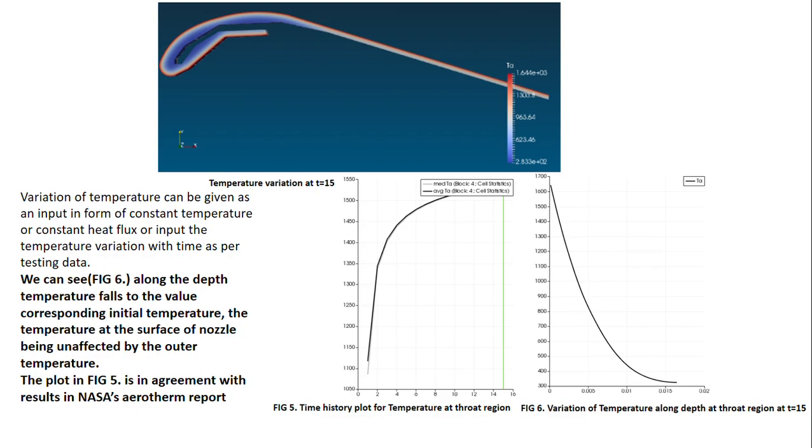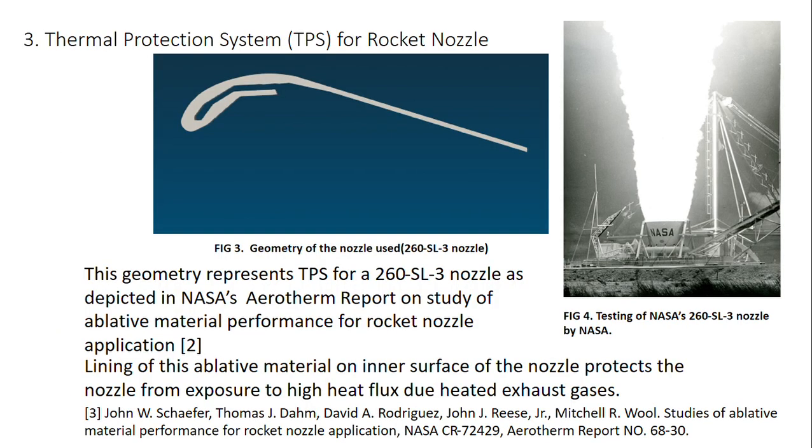This is the case for my ablative nozzle. On top you can see the plot for temperature variation at t equals 15 seconds. This is the geometry for the TPS used around the nozzle. Figure 5 is the input temperature that I am giving along different time steps. These values of temperature are taken from testing data in NASA's aerotherm report. I have added the reference earlier in this slide; you can find that data easily.